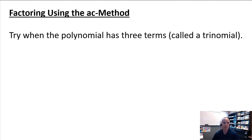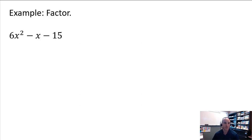The next technique is a really important one: factoring a trinomial using the AC method. This technique uses grouping, which is why we covered grouping first. Here's an example: 6x squared minus x minus 15. You can think of the coefficients 6, negative 1, and negative 15 as a, b, and c — that's why it's called the AC method.